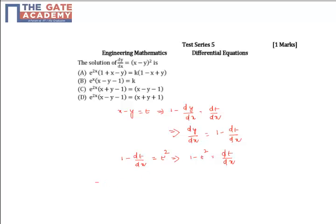I can rewrite this as 1 by 1 minus t square into dt equal to dx. Now I will do integration on both sides.